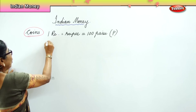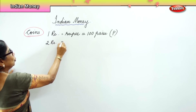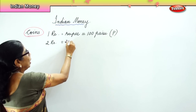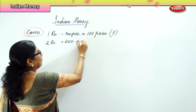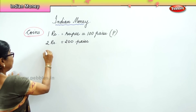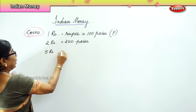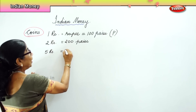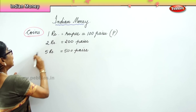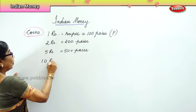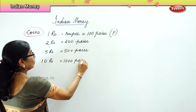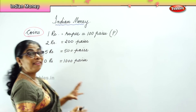Then we have 2 rupee coin. That is 200 paise. Then we have 5 rupee coin - that is 500 paise. Then we have 10 rupee coin - that is 1000 paise. That's all we have in coins.